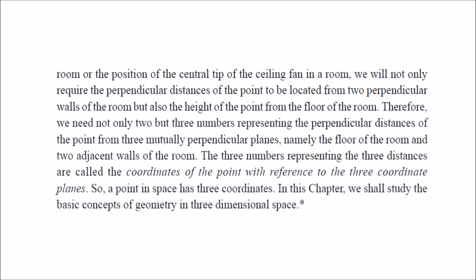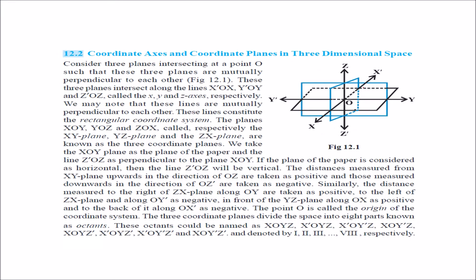We call this 3D geometry. Apart from these three dimensions — x, y, and z — previously in 2D we had four quadrants, but here we will have octants: 8 of them.